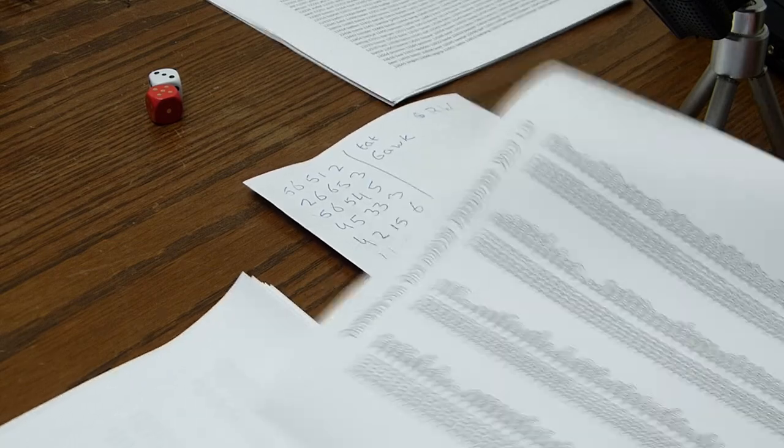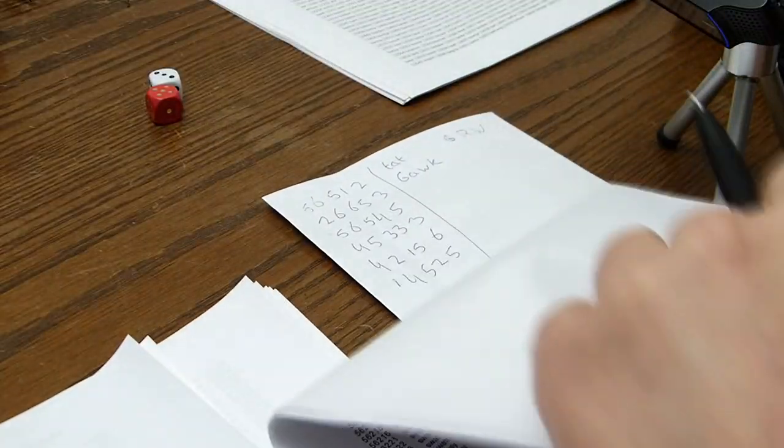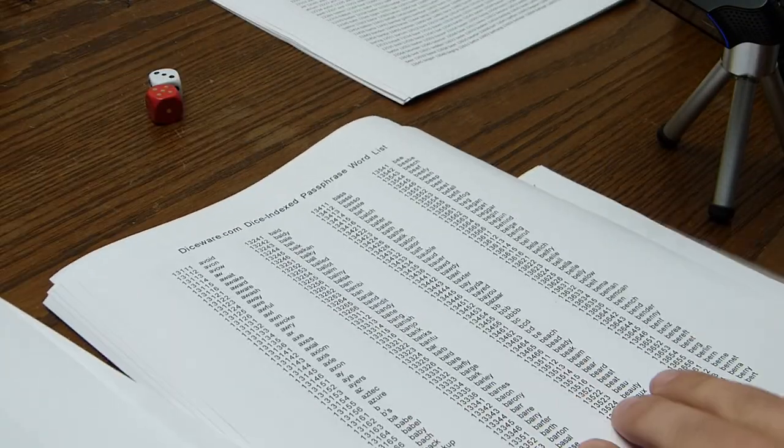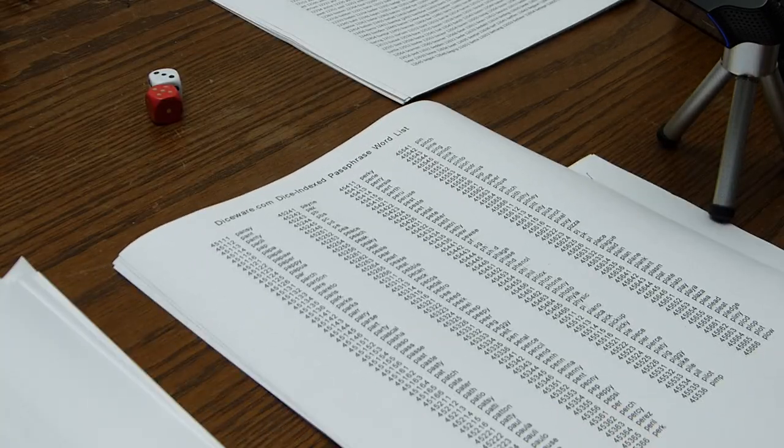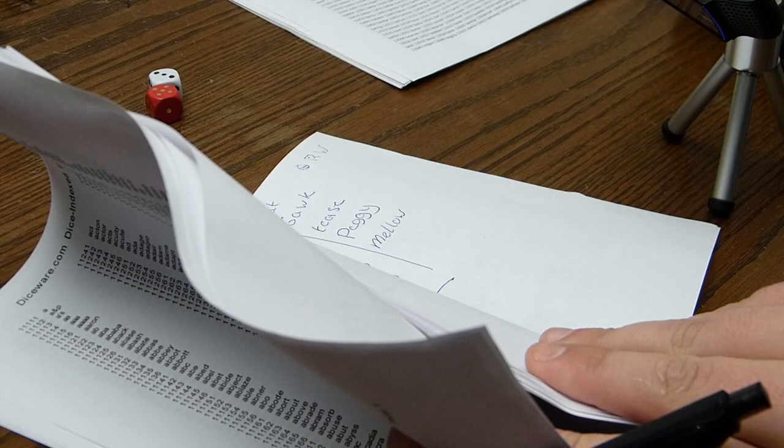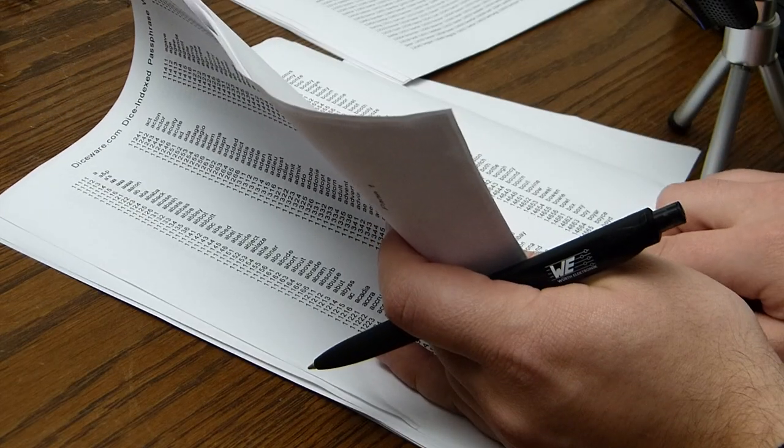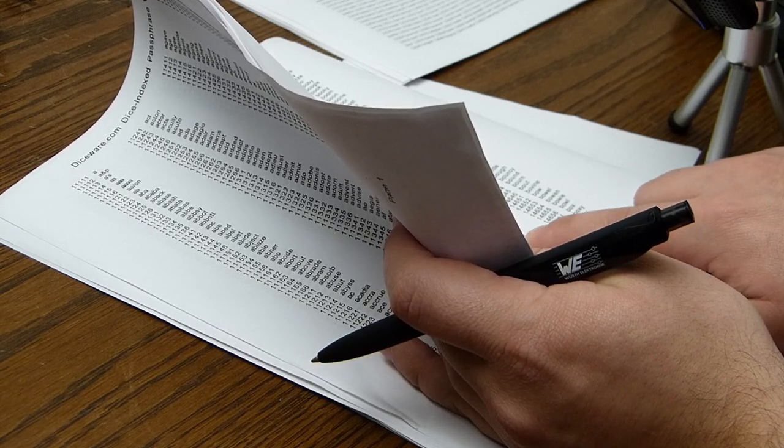[Continues looking up more dice roll combinations: 6, 5, 6, 5, 5, 6... 5, 6, 5, 4, 5... 1, 4, 5, 2, 5...] Bombay.